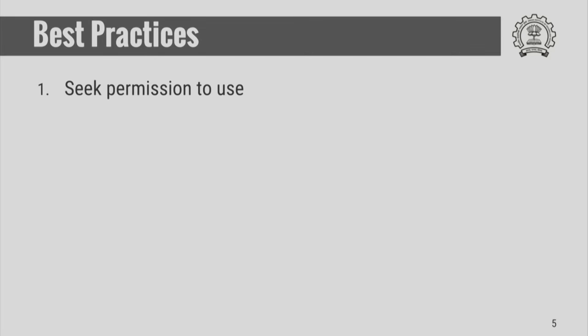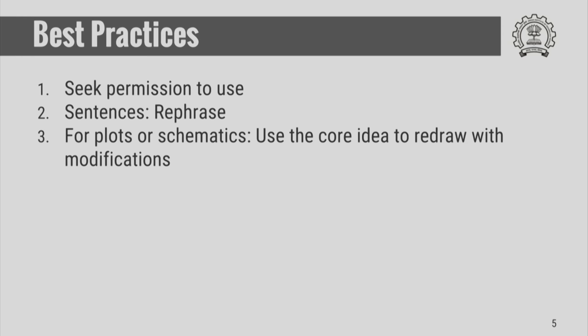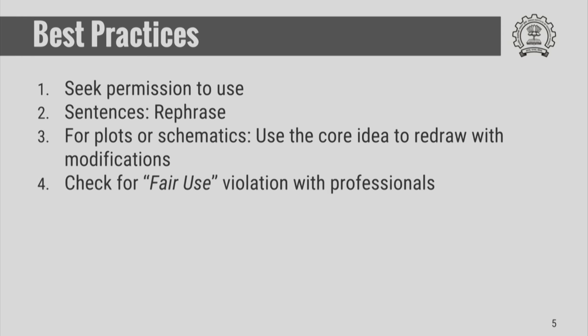Here are some best practices we can follow. Firstly, try to seek permission to use the material for your own purposes. If you cannot get permission, take the sentences and rephrase them. For images, plots or schematics, use the core idea and redraw them with your own modifications or your own intellectual or creative contributions. In all cases, make sure you credit the original work. Check for fair use with your colleagues or seniors who might be familiar with the extent to which particular material can be copied.